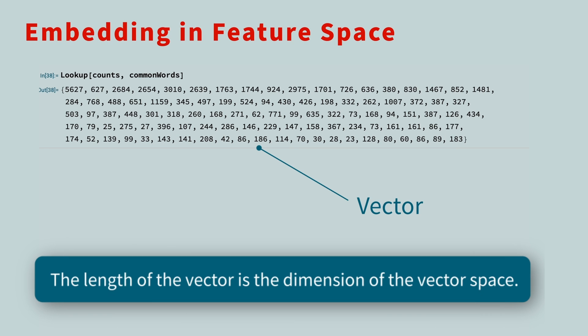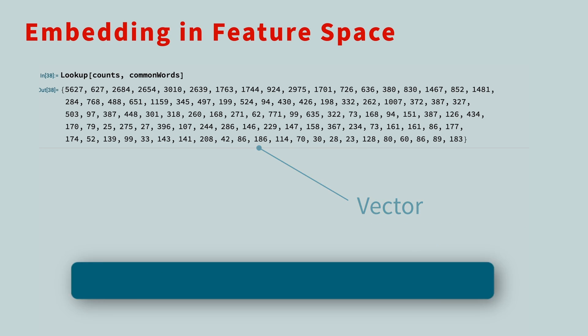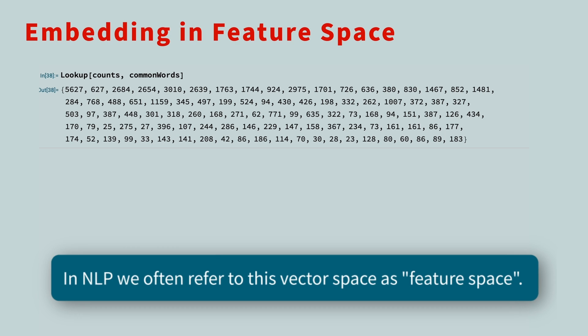The length of the vector is the dimension of the vector space. This shortened example is a vector in 100 dimensional space, but in practice, you would use many more words, which means a much higher dimension. In natural language processing, you will often refer to this vector space as feature space, since the numbers and vectors are features extracted from text.